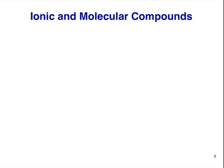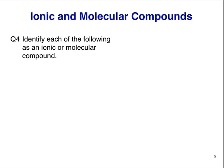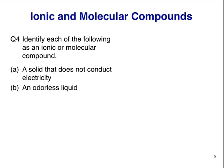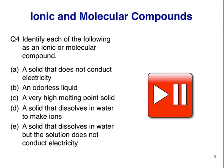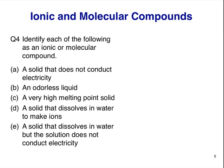For our last two questions, we'll do something different. We'll think about ionic or molecular compounds based on their physical and chemical properties. Identify each of the following as an ionic or molecular compound. A solid that does not conduct electricity. An odorless liquid. A very high melting point solid. A solid that dissolves in water to make ions. And a solid that dissolves in water but the solution does not conduct electricity. Pause the video here and write down some answers.